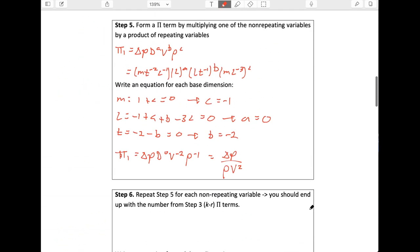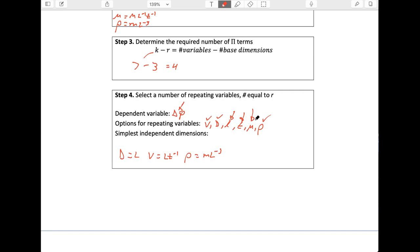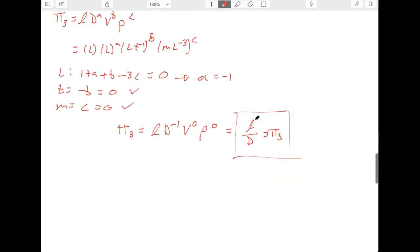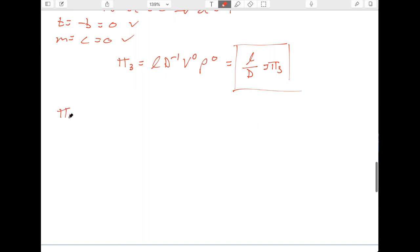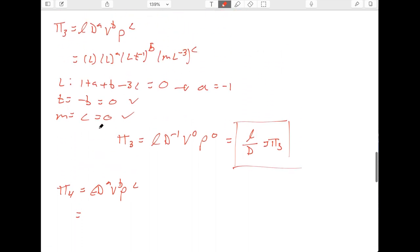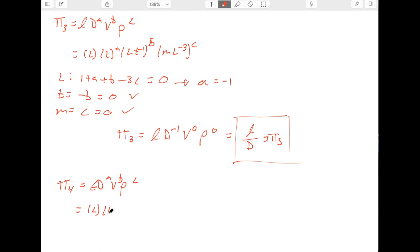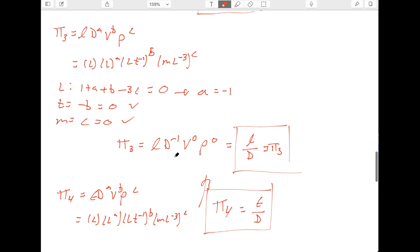The last one we need to do is roughness, little epsilon here. So we'll do the same thing, pi four. It's going to be epsilon D to the A, V to the B, rho to the C. And if I write one more step, you'll see it's actually the same as this one, right, because epsilon is just another length. L to the A, L T to the minus one to the B, ML to the minus three to the C. And so we already solved that because it's the same as this thing here, and so we can just write that pi four is equal to epsilon over D. All right, because A, B, and C are going to come out to the same values that they did for our third pi term.